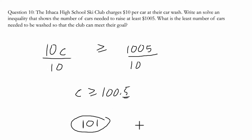And if we did 101 times 10, so 101 cars at $10 a car, we get $1,010, which is greater than $1,005. All right, hope this helped.